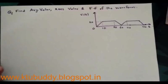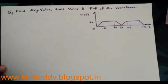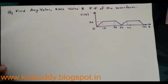Good morning. Let's go through an important problem from alternating current — that is, analysis of a waveform. Given a trapezoidal waveform, we are required to find the average value, RMS value, and form factor of this waveform. I am using the integration method for doing this problem.